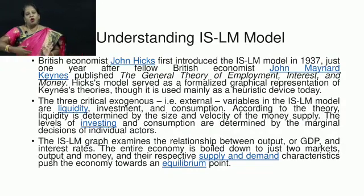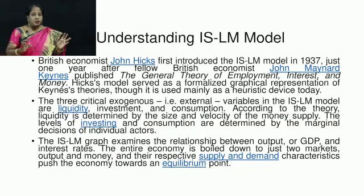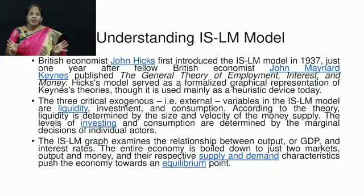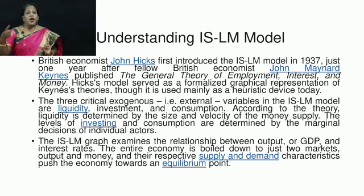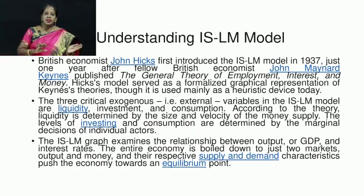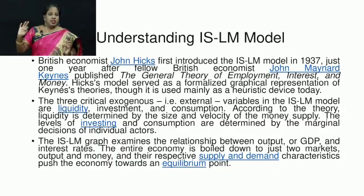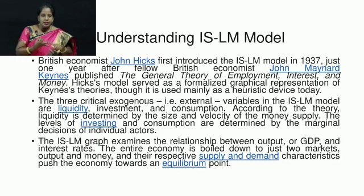British economist John Hicks first introduced the IS-LM model in 1937 — just one year after fellow British economist John Maynard Keynes published the General Theory of Employment, Interest and Money. Hicks' model served as a formalized graphical representation of Keynesian theory, though it was used mainly as a heuristic device today. There are three critical exogenous (external) variables in the IS-LM model: liquidity, investment, and consumption.